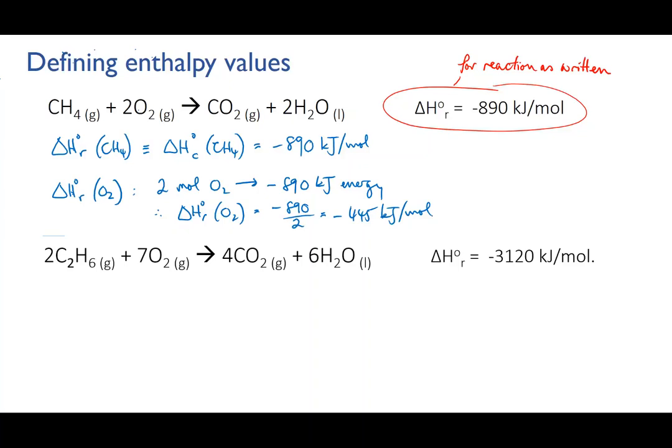Here's another combustion example: ethane gas burning in oxygen. Notice that this balanced reaction has two moles of ethane reacting with seven moles of oxygen. When we run this reaction with those amounts of reactants, we measure 3,120 kilojoules of energy being released. So what is the enthalpy of combustion of ethane?